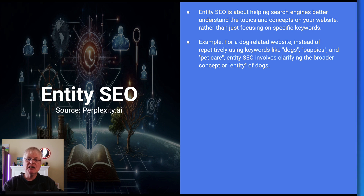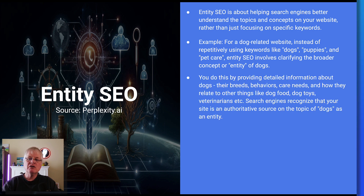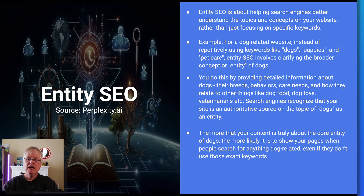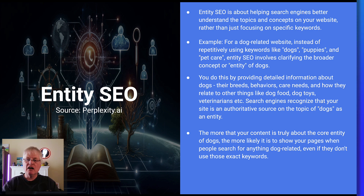Instead of repetitively using keywords like dogs, puppies, and pet care, Entity SEO involves clarifying the broader concept or entity of dogs. The way that you do this is you provide detailed information about dogs — breeds, behaviors, care needs, anything that relates to dog food, dog toys, veterinarians. Search engines then recognize that your site is an authoritative source on the topic of dogs as an entity. The more your content is truly about the core entity of dogs, the more likely it is that search engines will show those pages in the SERPs — even if they don't match the exact keywords typed into the search engine.